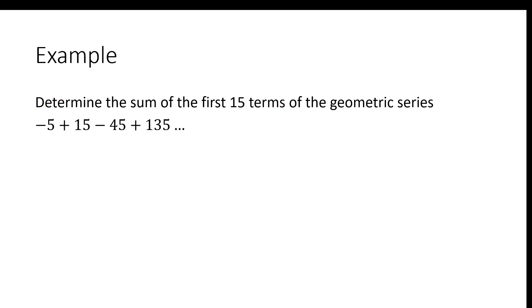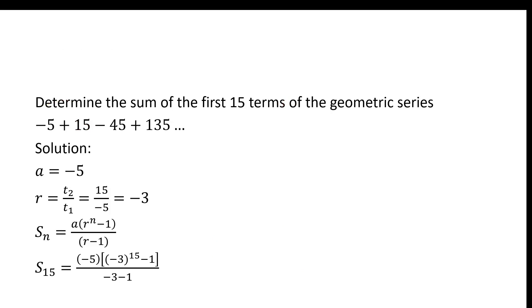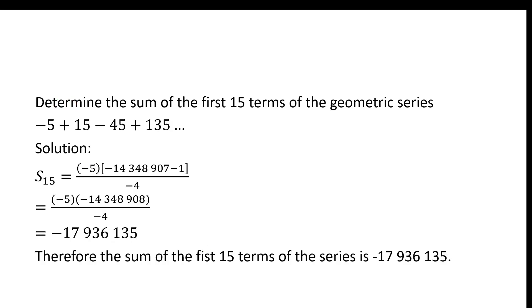Now, what if we wanted to determine the sum of the first 15 terms of the geometric series shown? Well, A is negative 5. R is negative 3, because we're always multiplying negative 3 to get from one term to the next. The sum of the first N terms will be A times R to the N minus 1 over R minus 1, and we plug those numbers in. And when we do that, we let our calculator do much of this work, we see that the sum will be negative 17,936,135.